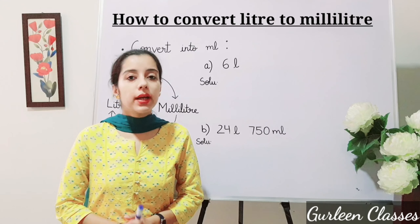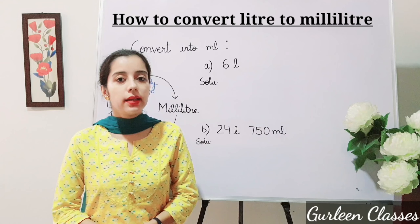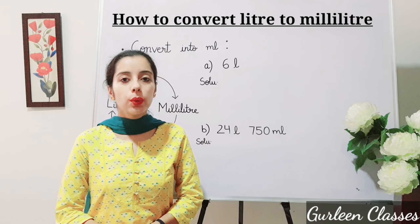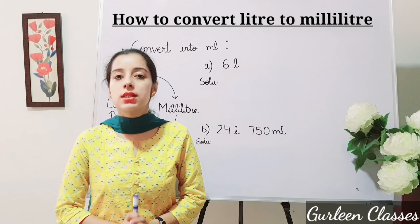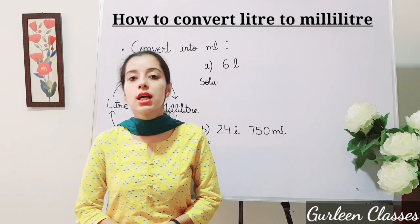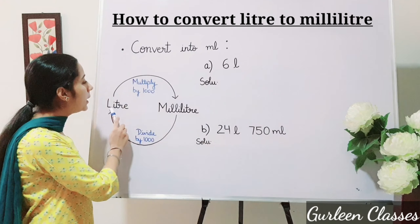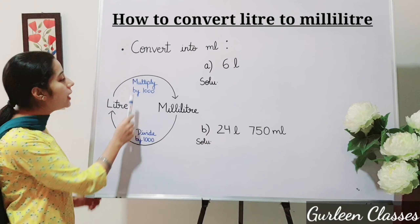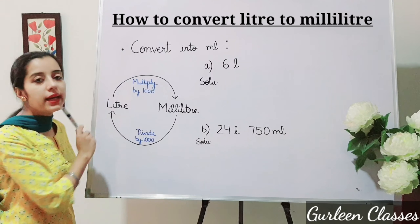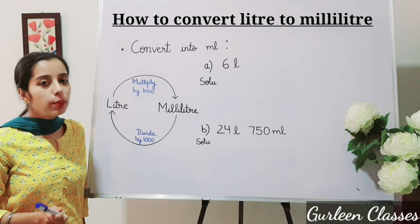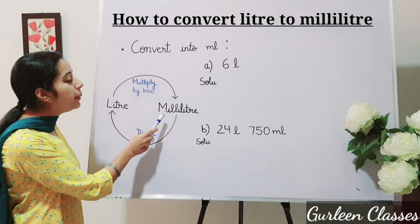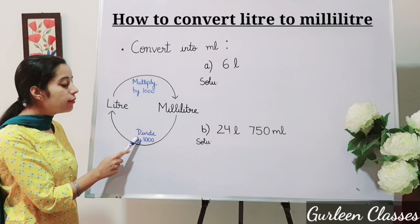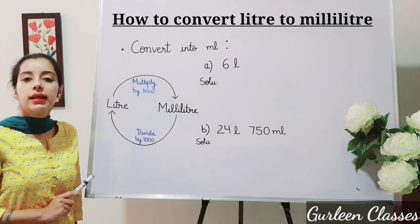Now let us learn how to convert liter to milliliter. For converting liter to milliliter, we have to multiply by one thousand. And for converting milliliter to liter, we will divide by one thousand.